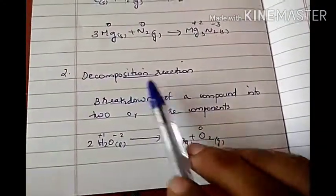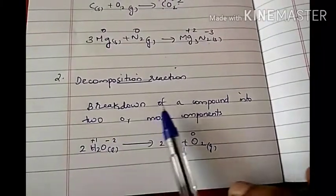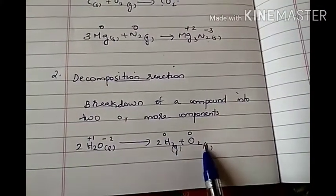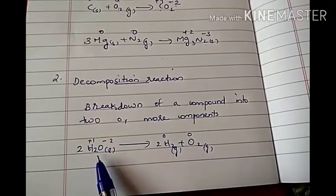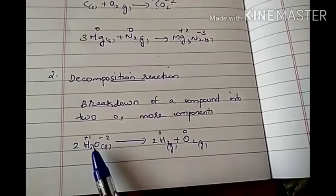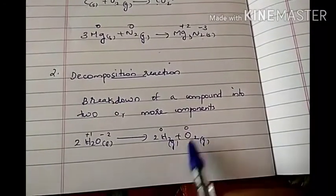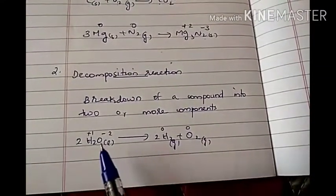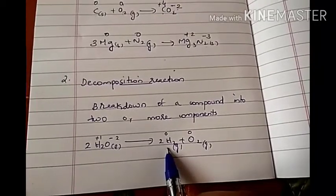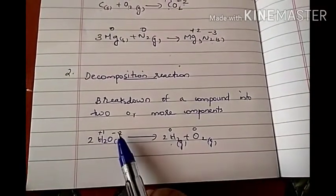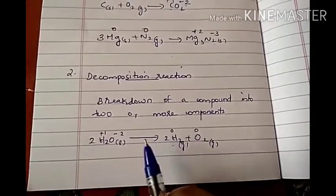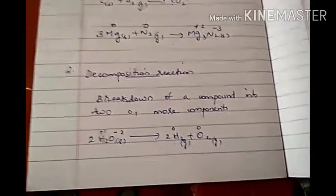The second type of redox reaction is decomposition reaction. Decomposition reaction involves the breakdown of a compound into two or more components. For example, when we pass electricity through water, it decomposes into hydrogen and oxygen. In water, the oxidation number of oxygen is minus two and hydrogen is plus one. In the products, hydrogen's oxidation number is zero and oxygen's is also zero since they are in elemental form. Hydrogen's oxidation number decreases from plus one to zero — so it is undergoing reduction. Oxygen's oxidation number increases from minus two to zero — so it is undergoing oxidation. Both oxidation and reduction occur, so this is a redox reaction.